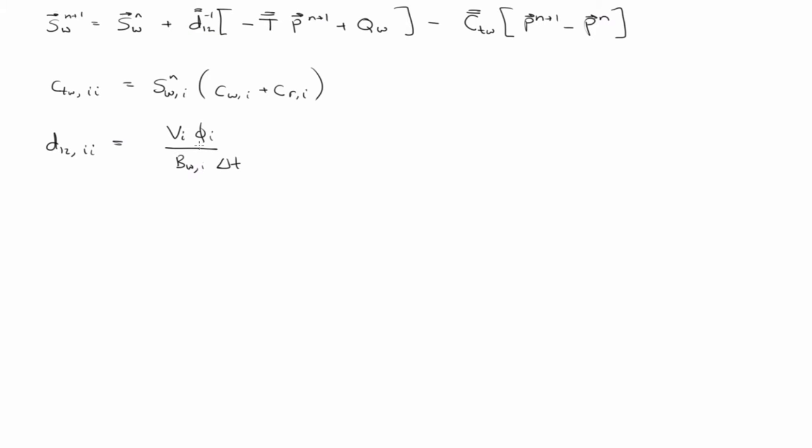It looks like that. Now, the T matrix is the total transmissibility. We can write that as the sum of the water and the oil transmissibilities.